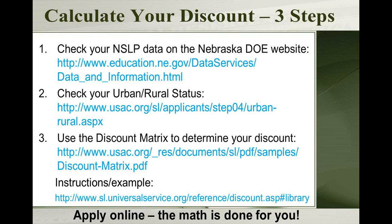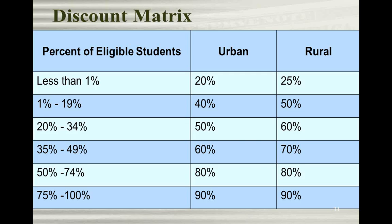Once you have those two pieces of information — the percentage of students eligible for school lunch and your urban/rural status — USAC has a discount matrix where you figure out your discount. If you do the forms online, the math will be done for you. You just plug in your numbers and it calculates everything. For libraries at 49% or less eligibility, being rural does give a slightly higher discount. Most Nebraska libraries fall between 60%, 70%, and 80%.